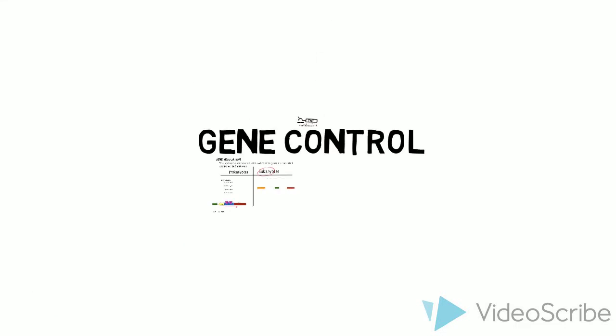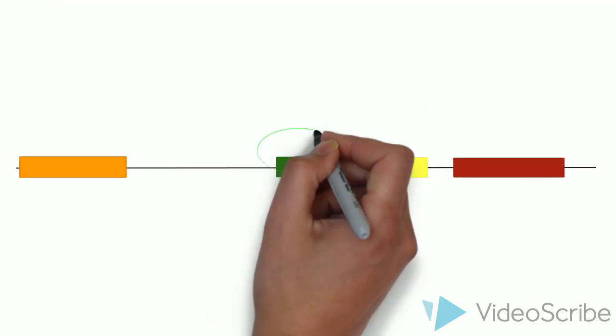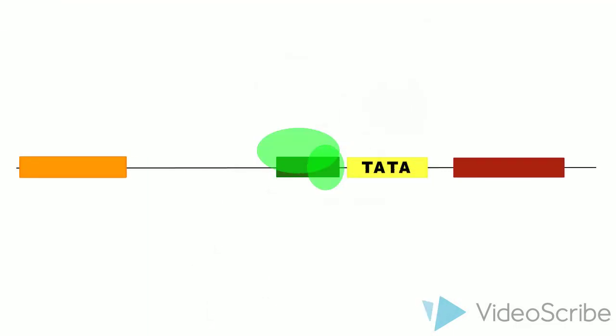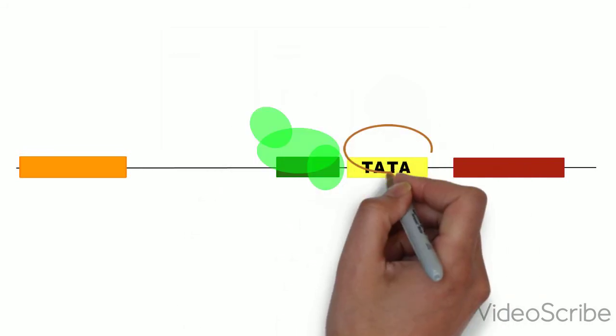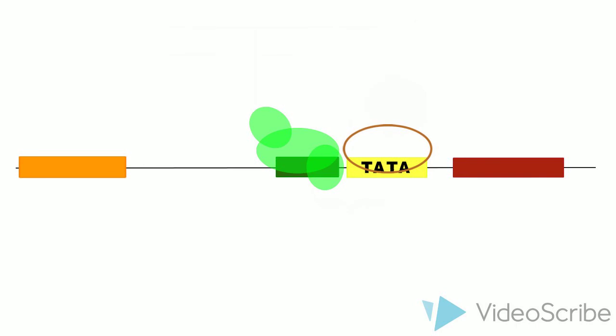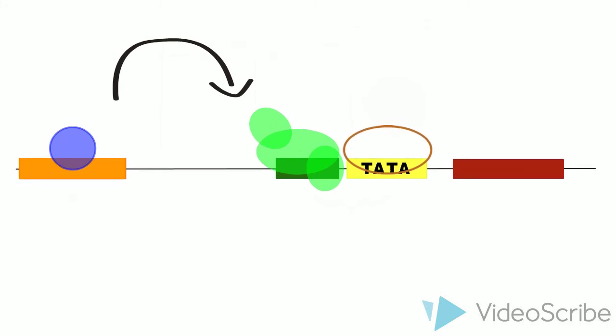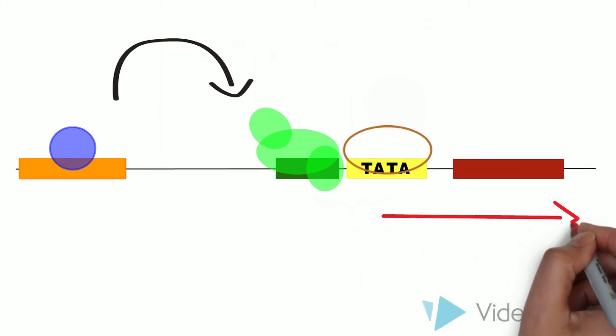So what is the process? First, the basal transcription factors attach to the promoter. There is often more than one, depending on what is required by that specific gene. Now, RNA polymerase can bind. An activator then binds to the enhancer. A specific protein then folds the DNA so that the activator binds to the other transcription factors. It is only now that the RNA polymerase can start to translate the desired gene.